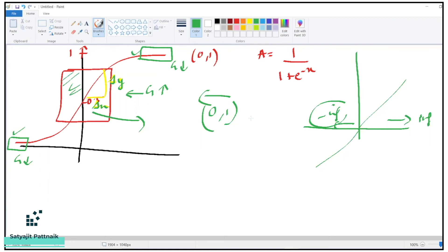So sigmoid function is one of the functions which is mostly used in deep learning. It has its own drawbacks as well. We'll not talk about the drawbacks right now. We have the drawbacks covered after few classes, when we talk about the exploding gradient and vanishing gradient problems. But let's continue for the time being.